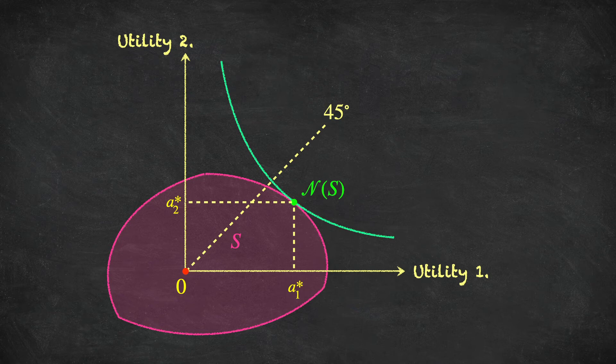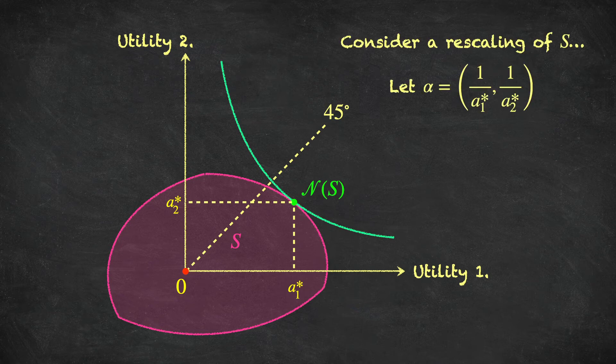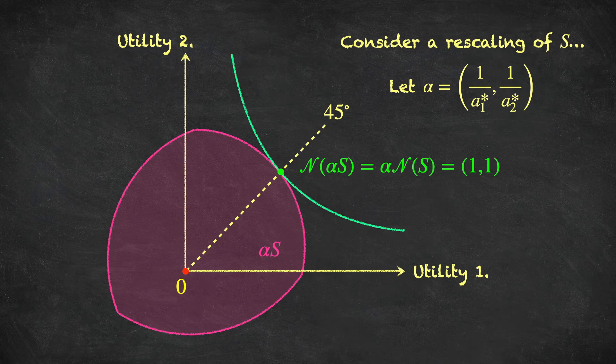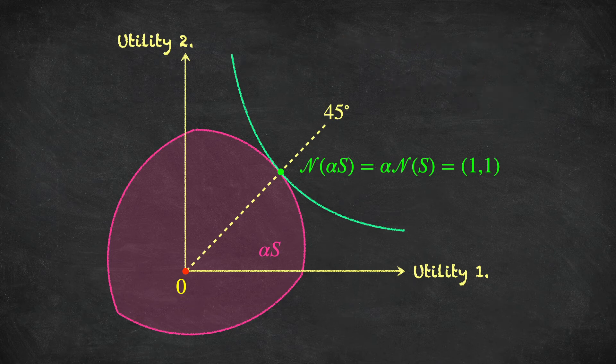Now let's consider rescaling the problem. I'm going to take the utilities of both players and rescale them so that the Nash solution is mapped to the point (1, 1). If I let alpha be (1/A* 1) for player 1 and (1/A* 2) for player 2, then transforming the game to alpha*S gives a new problem, and the Nash solution for this problem is (1, 1). That is, the Nash solution to alpha*S equals alpha times the Nash solution, which equals (1, 1) — and we know from Proposition 1 that the Nash solution satisfies linear invariance.